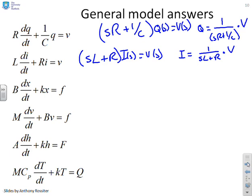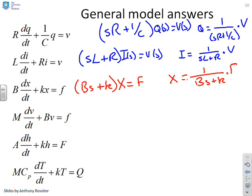For the next one, which is the spring damper, you'll see I can write (Bs + K) into X(s) = F(s) or X = 1/(Bs + K) into F(s). The mass damper: I get (Ms + B) into V(s) = F(s) or V = 1/(Ms + B) into F.